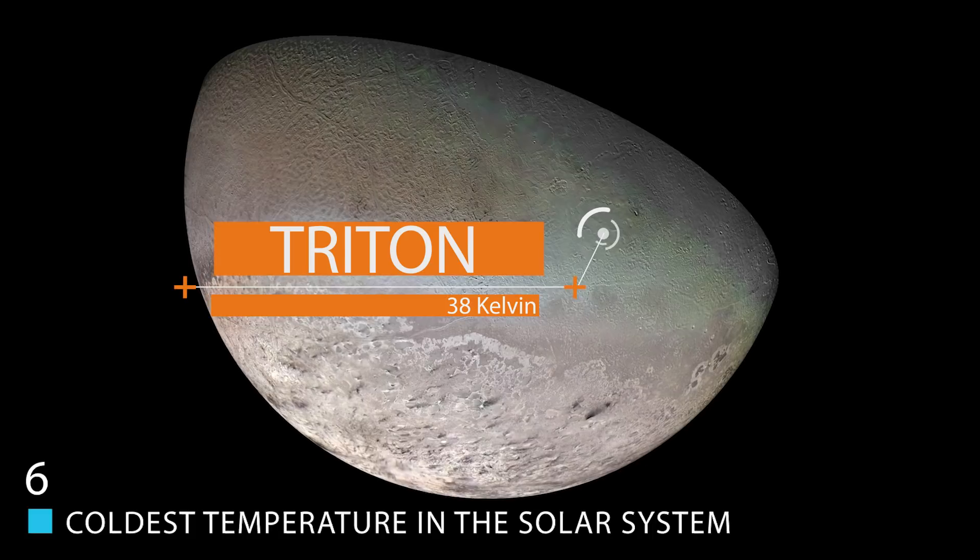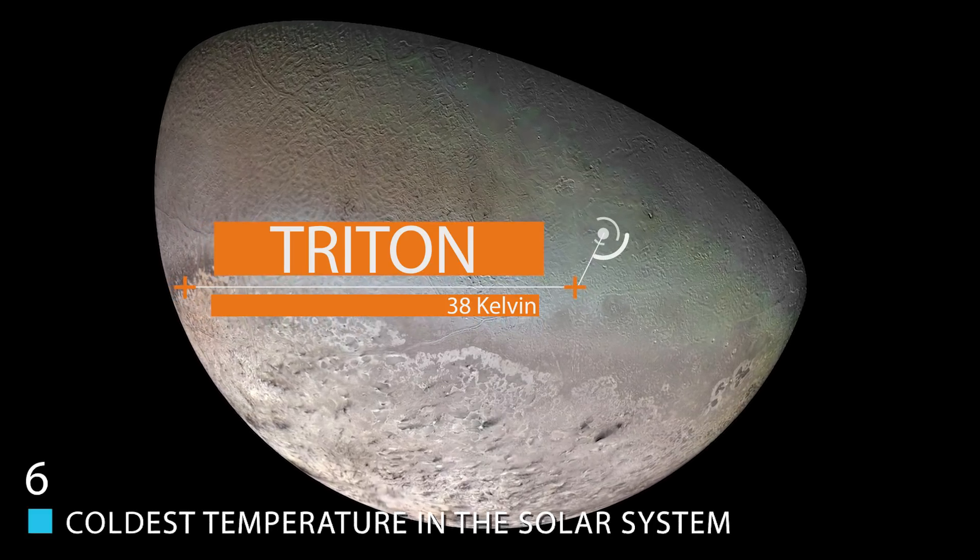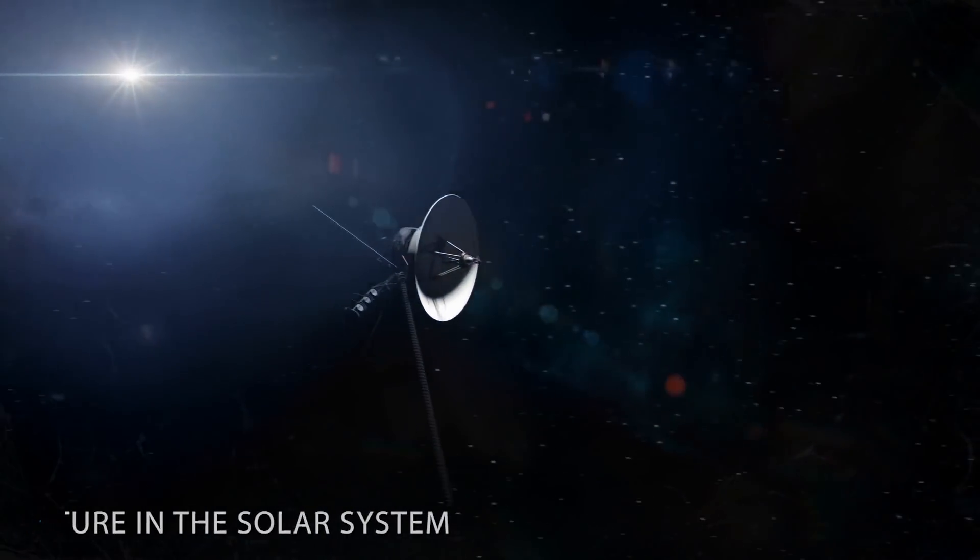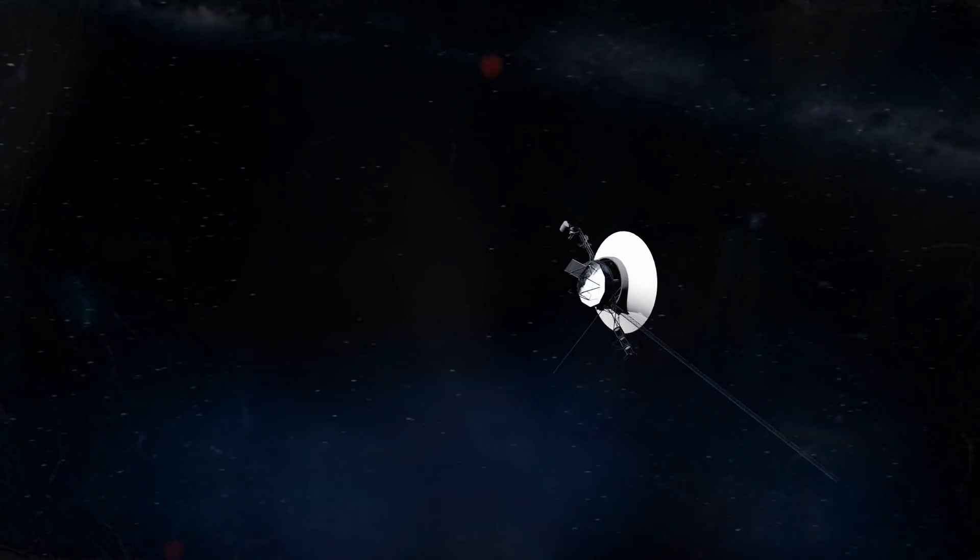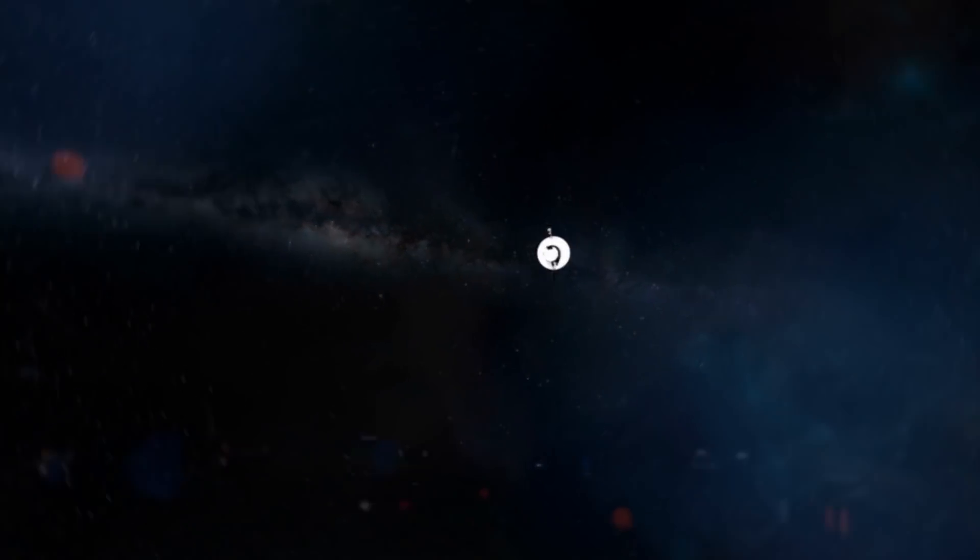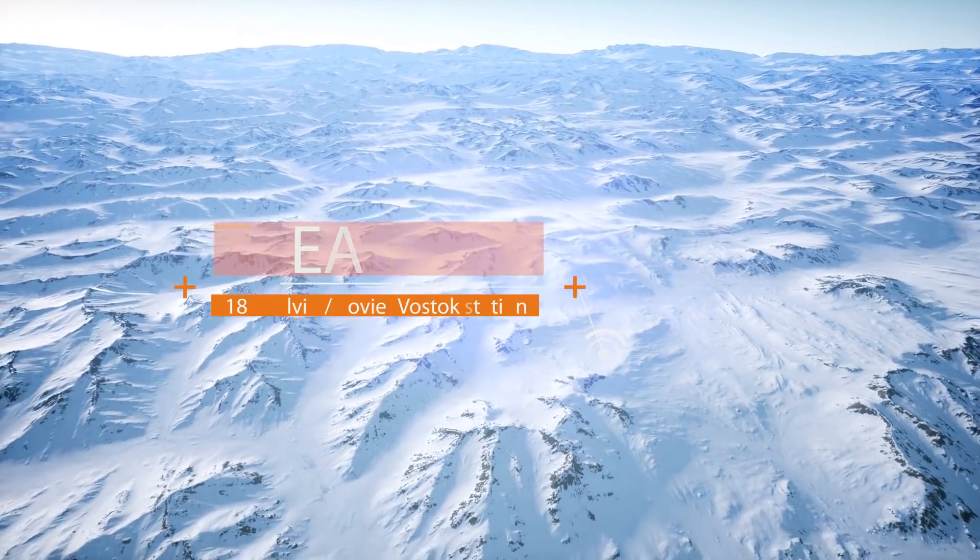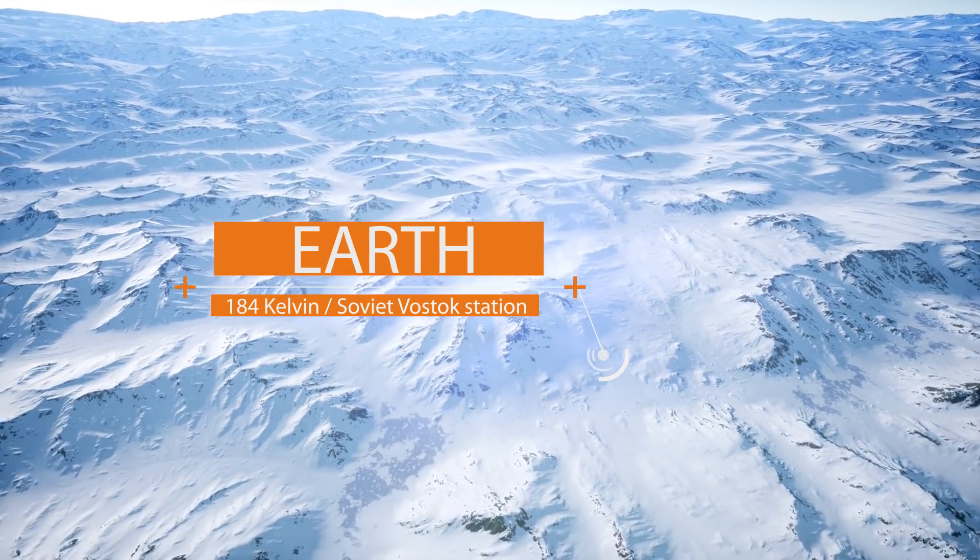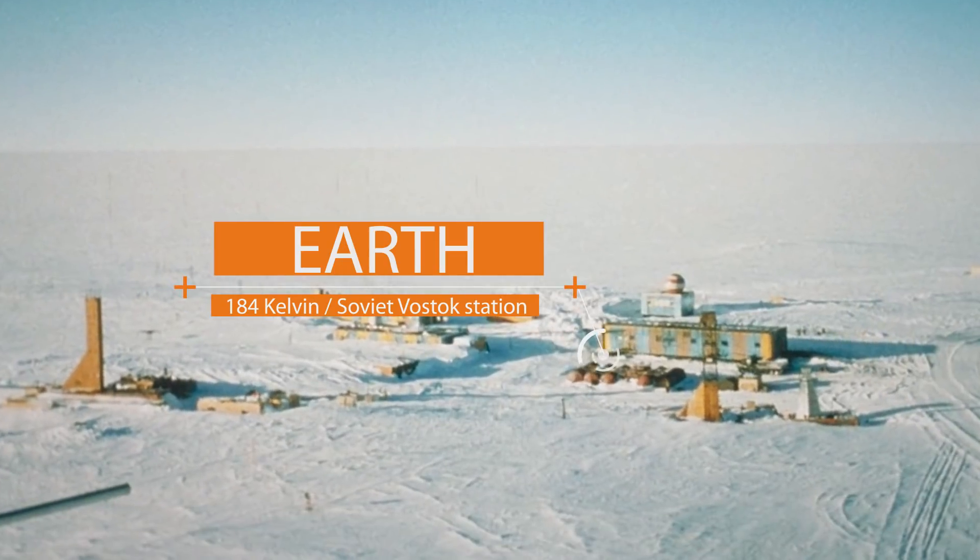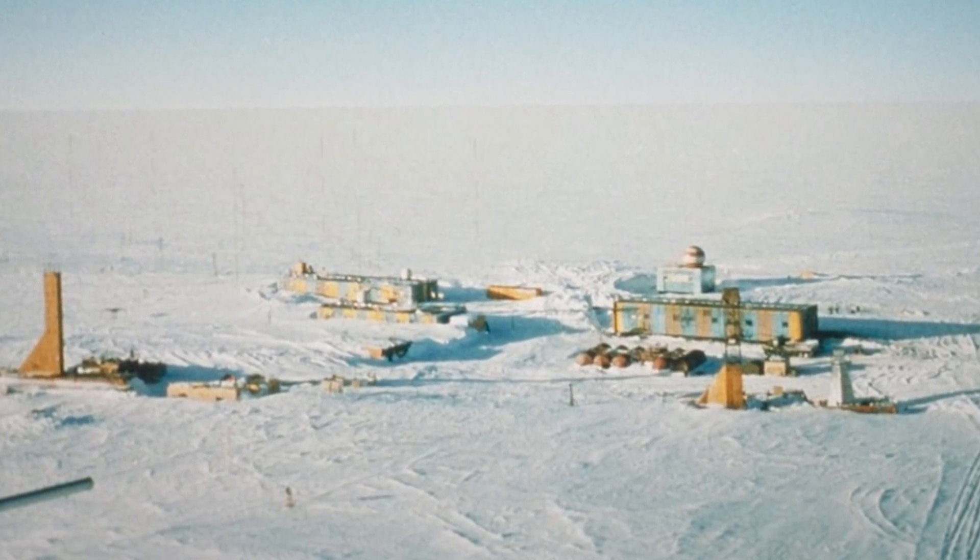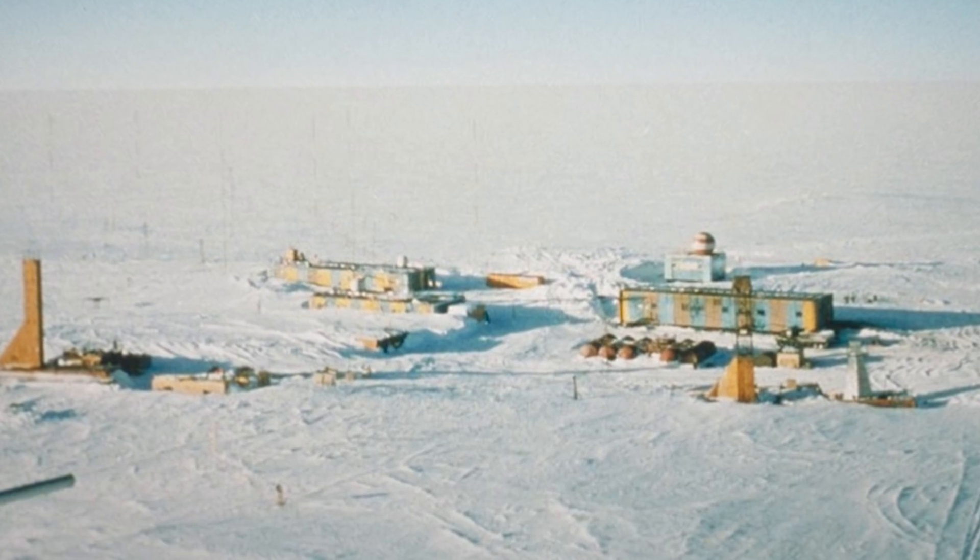The coldest temperature in the solar system was measured in 1989 by Voyager 2 on the surface of Triton, which is one of Neptune's moons, and it's barely chilly by comparison to the coldest temperatures. Additionally, the coldest temperature ever recorded on Earth is approximately 184 Kelvin. It was recorded at the Soviet Vostok station in Antarctica on July 21, 1983 by ground measurements.